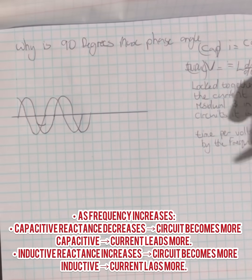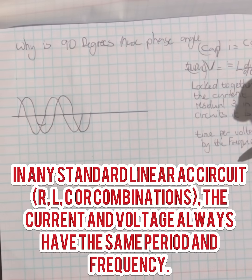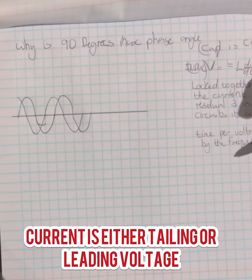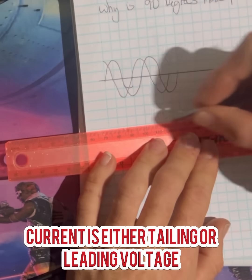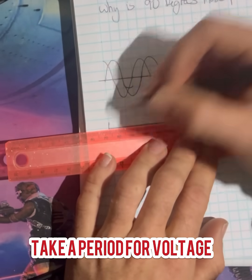Frequency determines the period, and current is either trailing or leading the voltage. So say you take a period because your period...